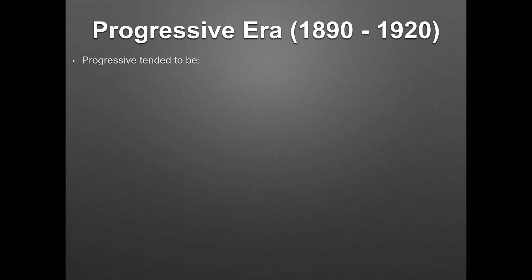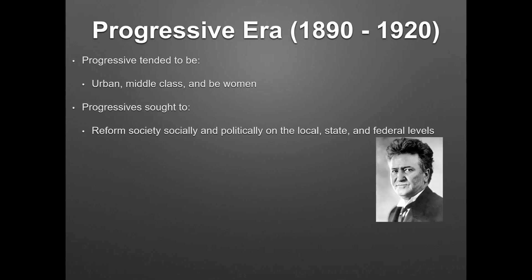Let's talk about our next part of the unit, which is the Progressive Era. This lasted around the 1890s all the way to 1920. Progressives tended to be urban, middle class, and women. Progressives will seek reform — to reform society socially and politically on the local, state, and federal levels. They wanted to use the federal government to regulate certain things, like businesses and monopolies.